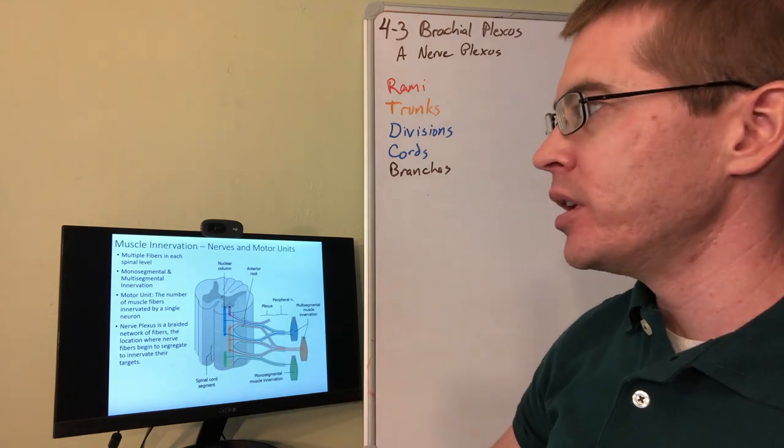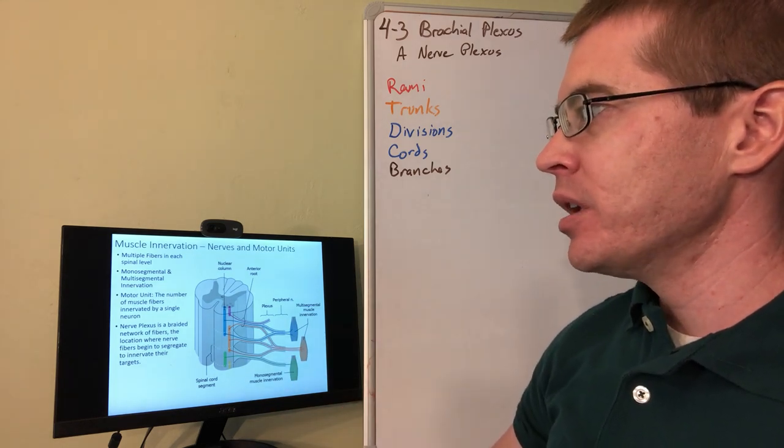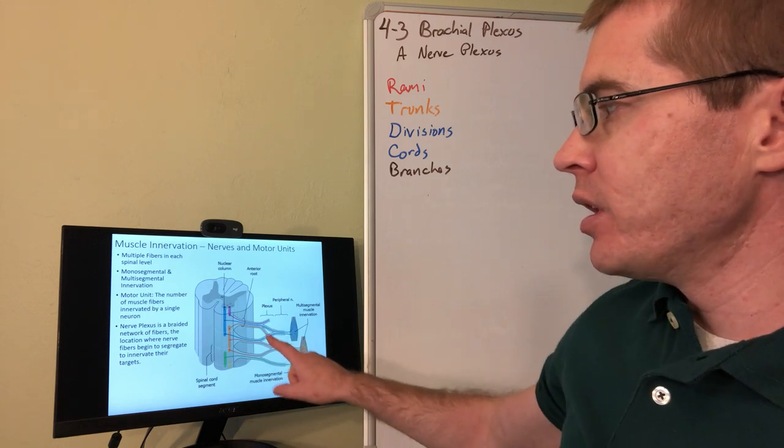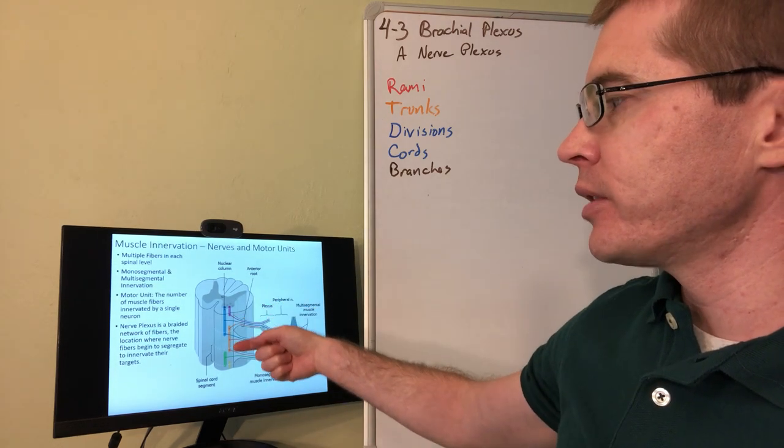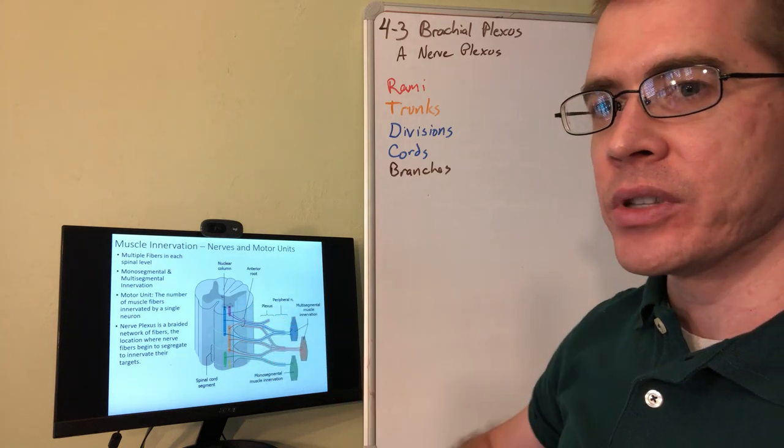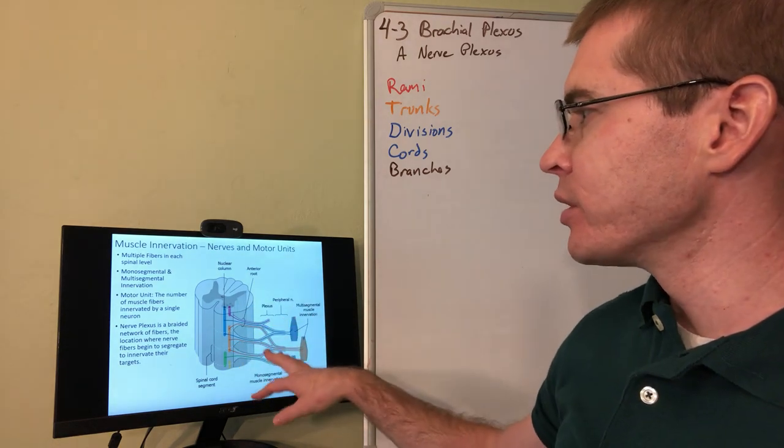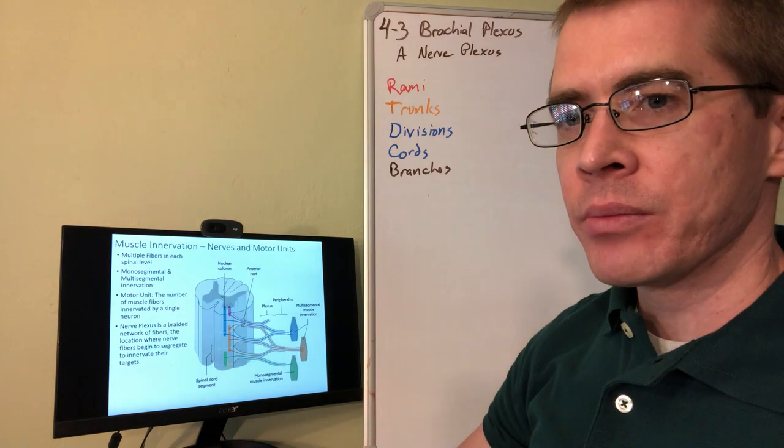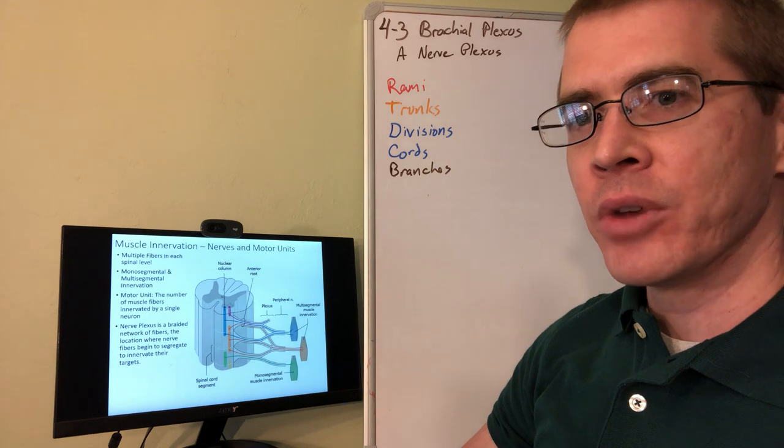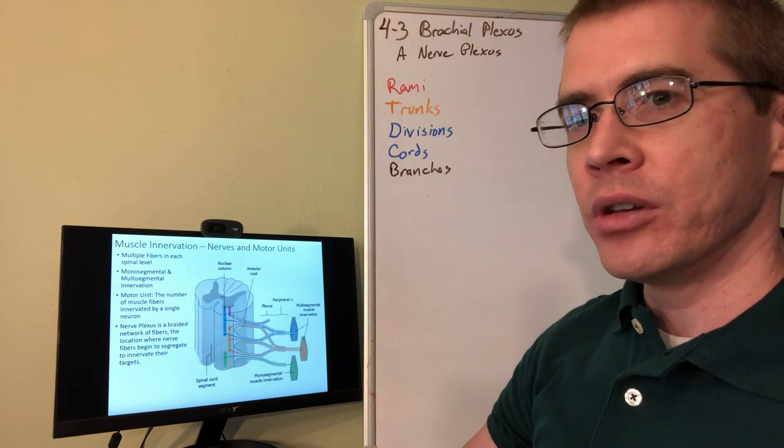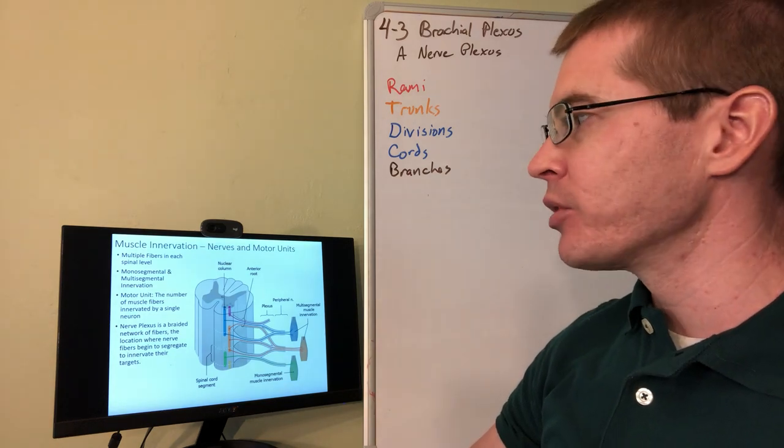What's also important here is the concept that these fibers in these plexuses can form from multiple different fibers from multiple different segments. So some of these nerves might be mono-segmental, some of them might be multi-segmental. In fact, most nerves are going to end up being multi-segmental, especially in the brachial plexus.